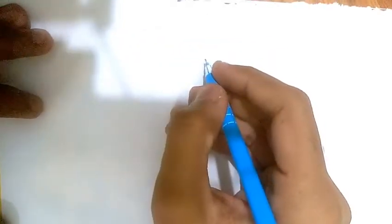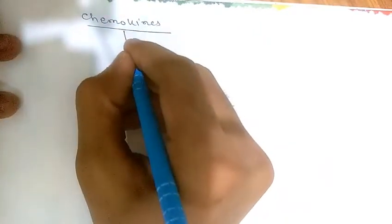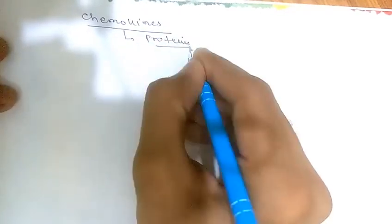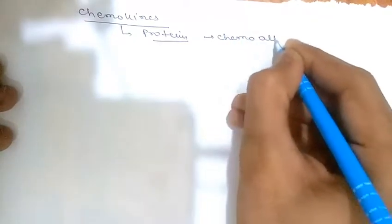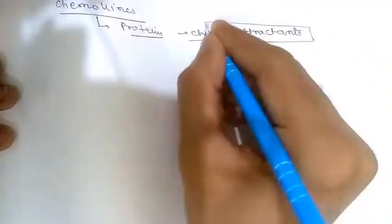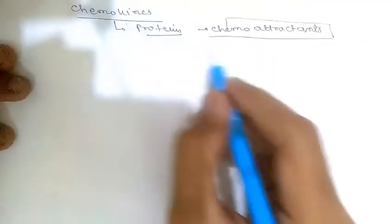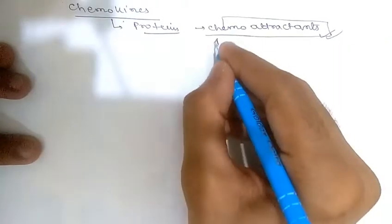Now we will discuss chemokines. Chemokines are a family of small proteins that act primarily as chemo-attractants. About 40 different chemokines and 20 different receptors for chemokines have been identified.